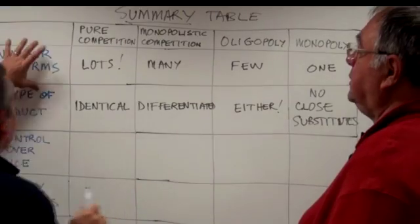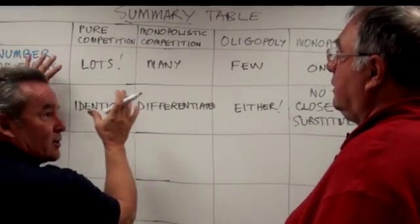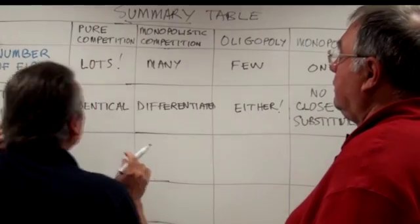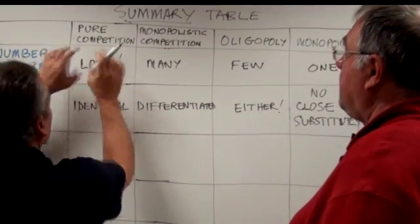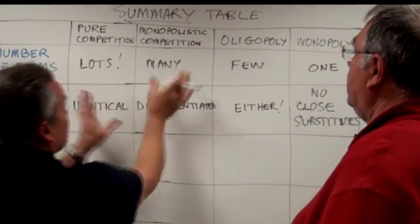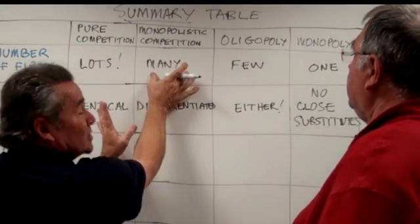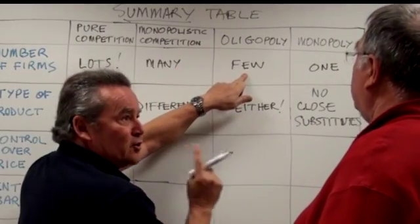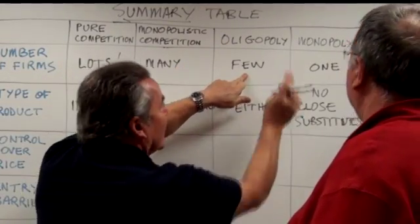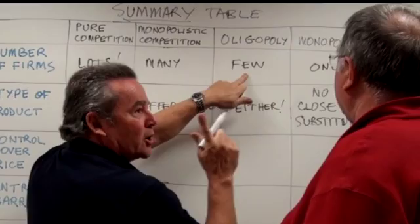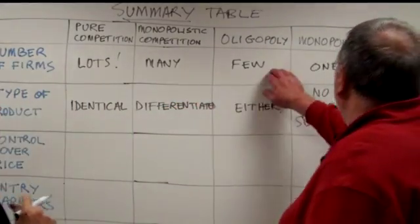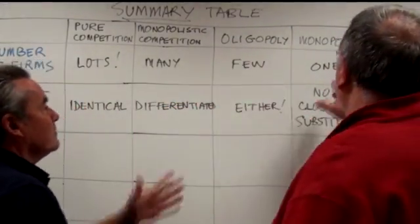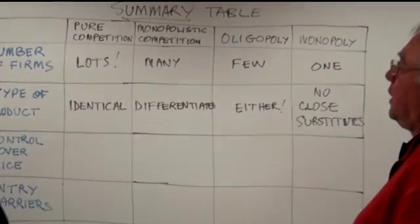Along the number of firms — and of course this is our concentration ratio or competition spectrum — pure competition has lots and lots of small firms. Monopolistic competition still has many, many small firms. Remember the fewness in oligopoly? And of course mono means only one. Central market banks, or vegetable markets. Australia Post.